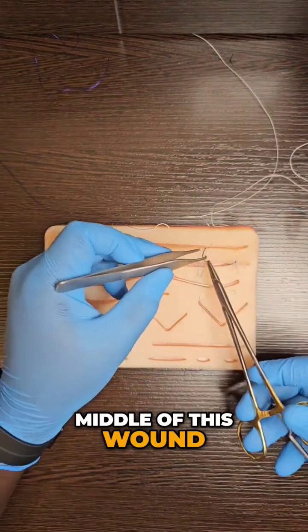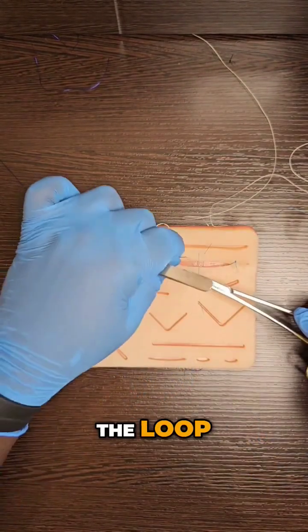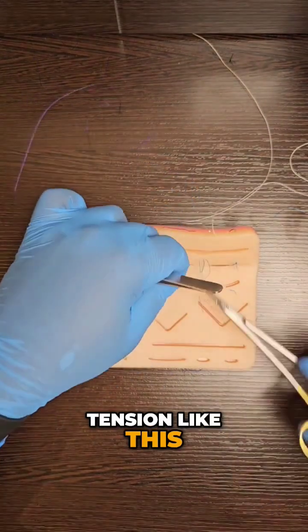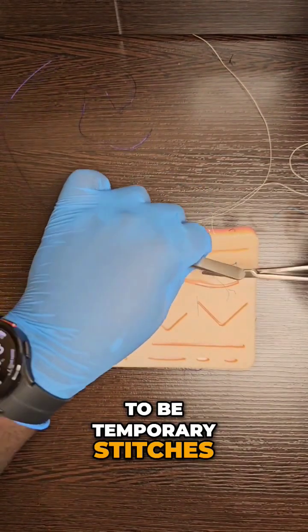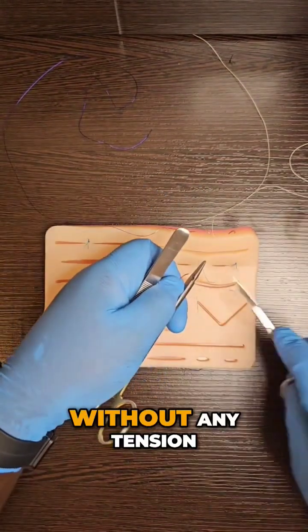I've passed it through the loop. That's what makes it locking. It takes out the tension like this, and these are going to be temporary stitches for me to put in some deeper sutures without any tension.